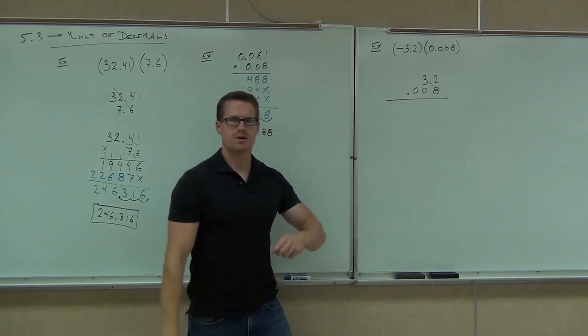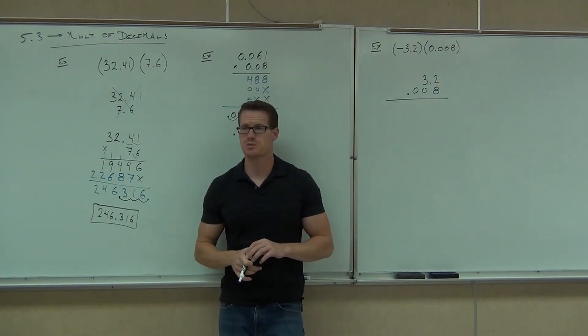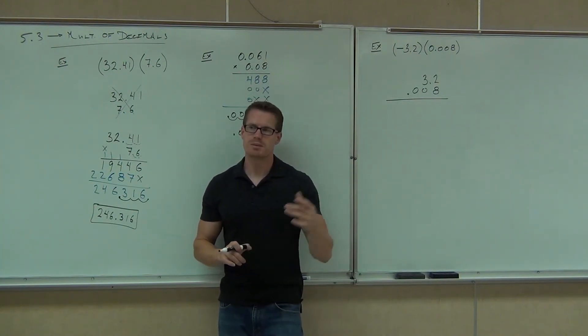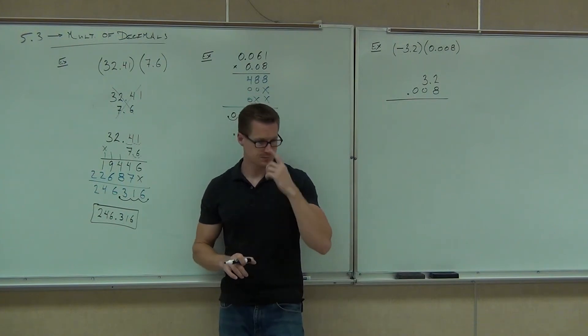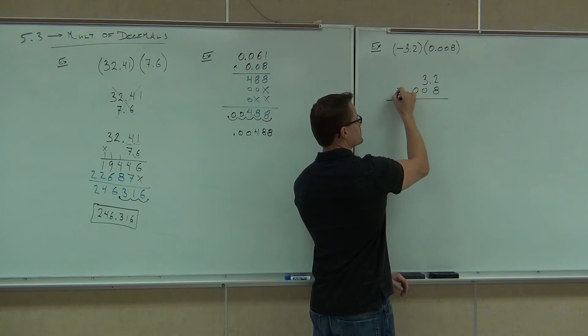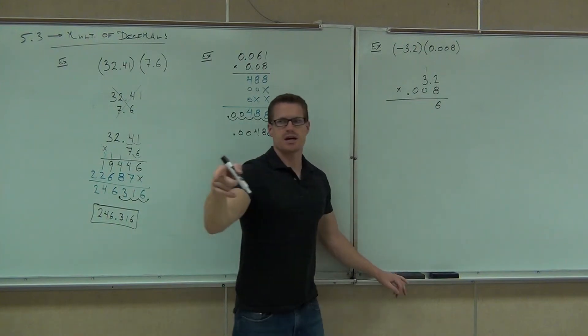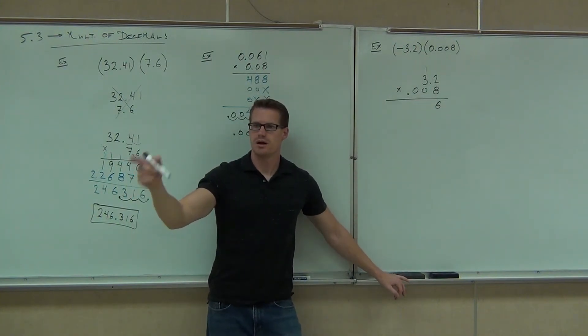Does it matter which number goes on the top for multiplication? What do you think? Not really. I mean, it's commutative. That means you can switch around. It doesn't make a difference. So I'm going to choose to have those 0s on the bottom. Now, let's go ahead and do this together. We multiply that 8 times the 2 and get how much? 16. I'll carry the 1. Somebody else, 8 times the 3 gives you? Add the 1.